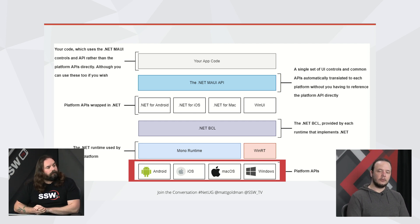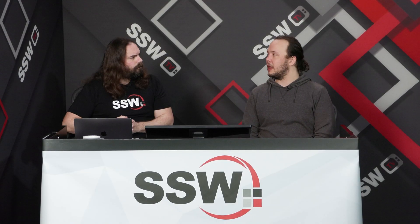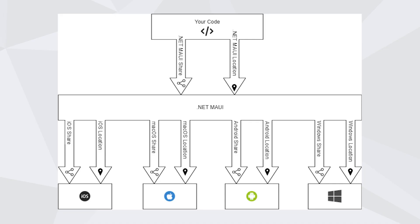So I write my UI in XAML and my app using the .NET MAUI API, which then figures out whatever it needs depending on what device it's running on. For example, I just call something like 'camera' in the .NET MAUI API and it handles the rest. That's a good example — yes, pretty much.